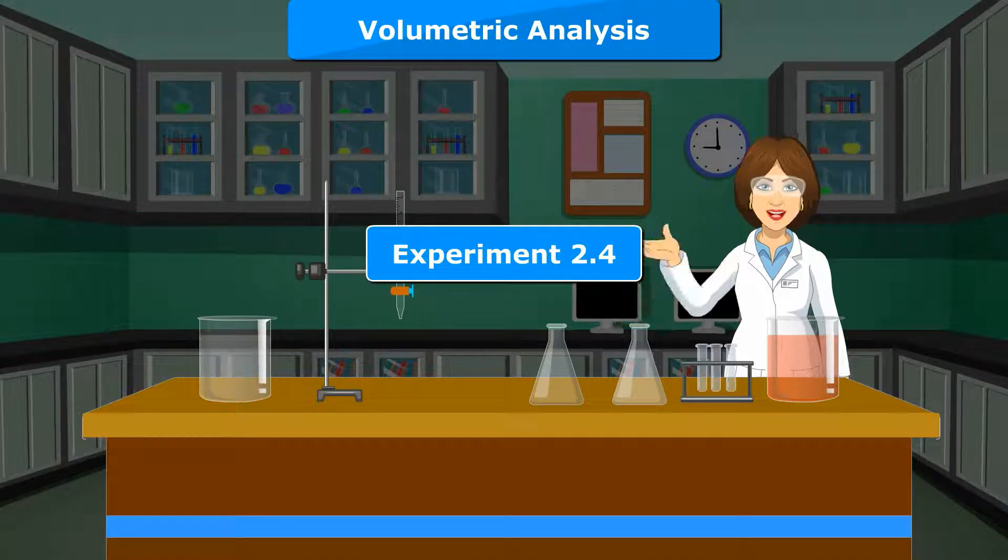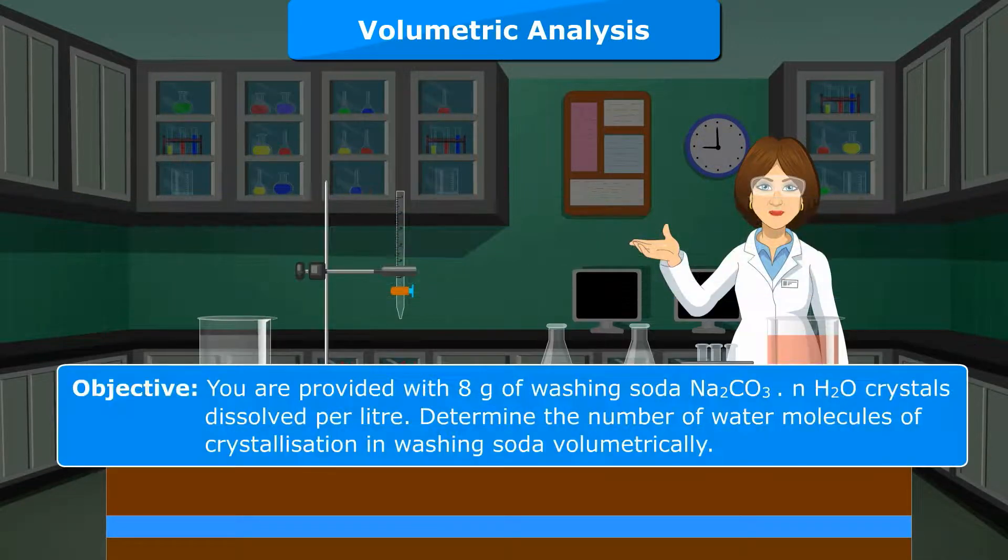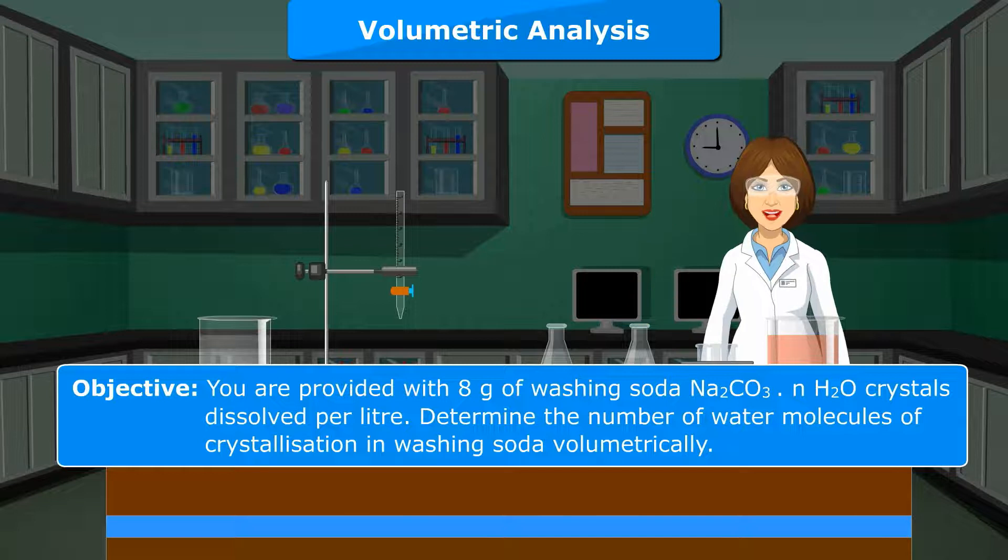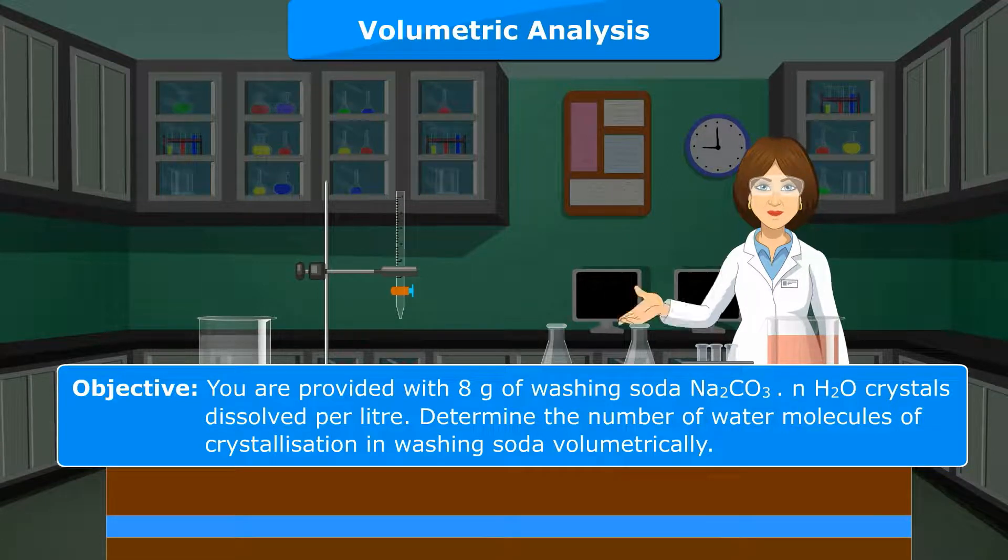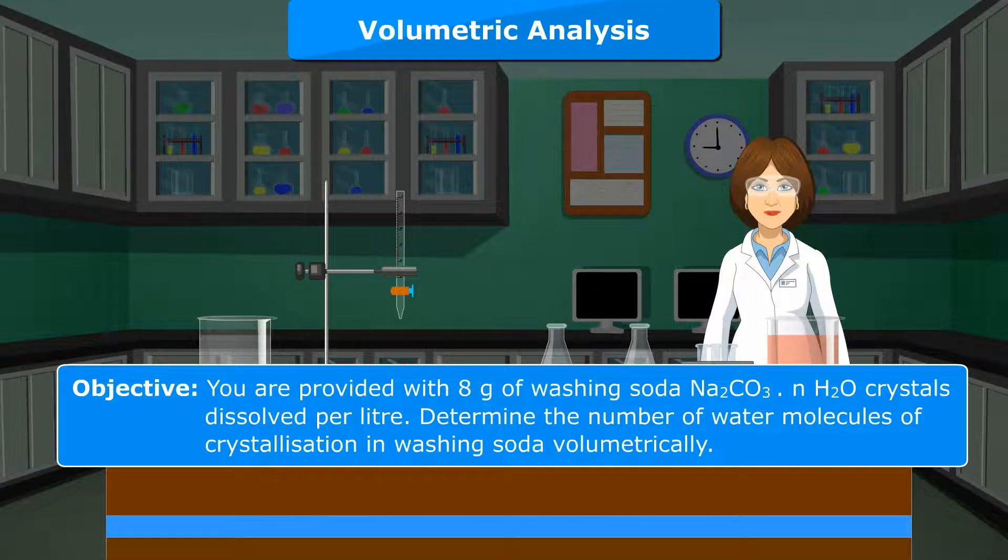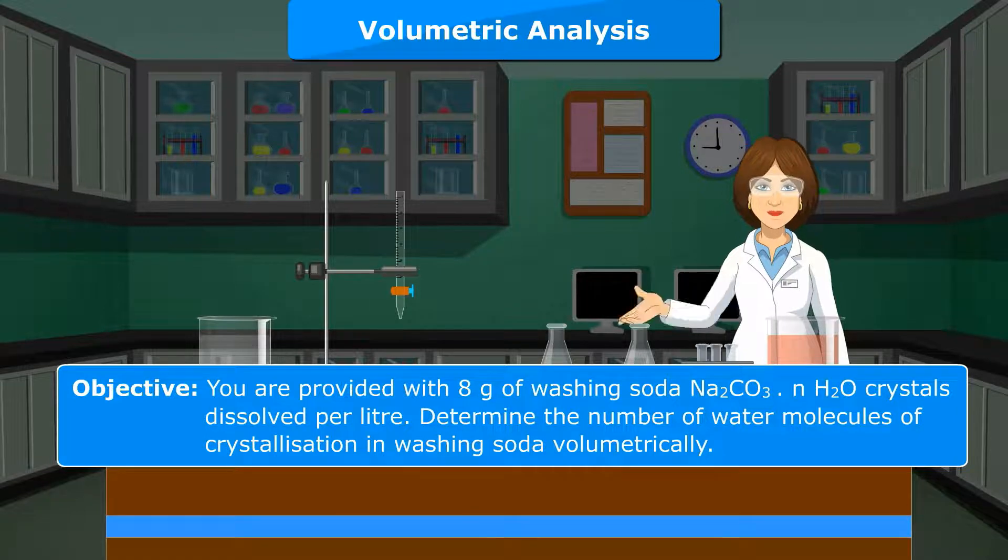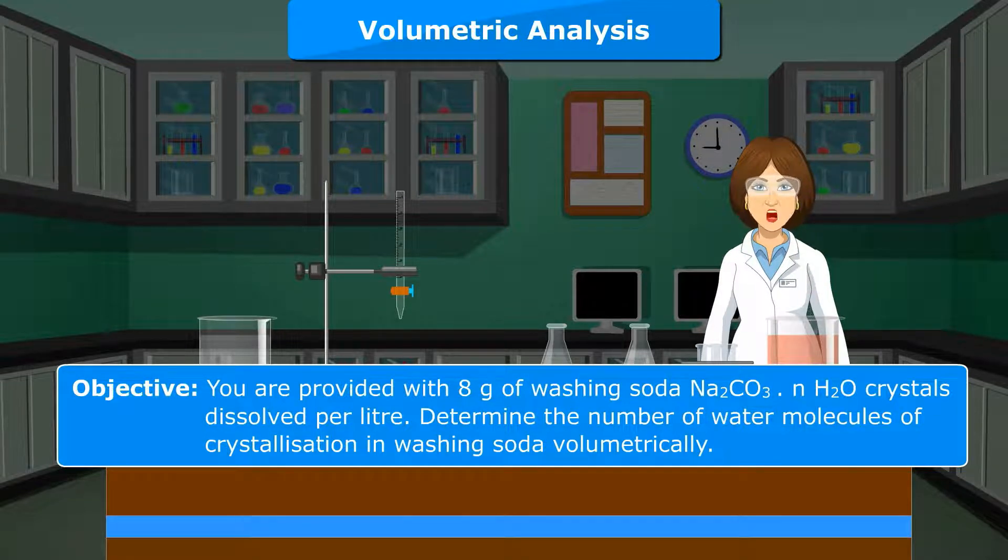Experiment 2.4 Objective: You are provided with 8g of washing soda Na2CO3·nH2O crystals dissolved per litre. Determine the number of water molecules of crystallization in washing soda volumetrically.